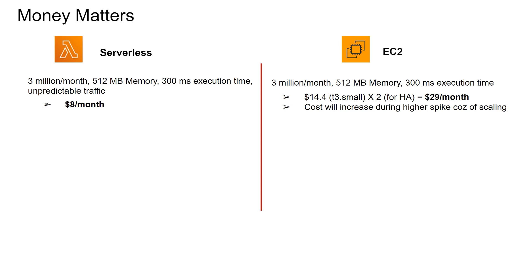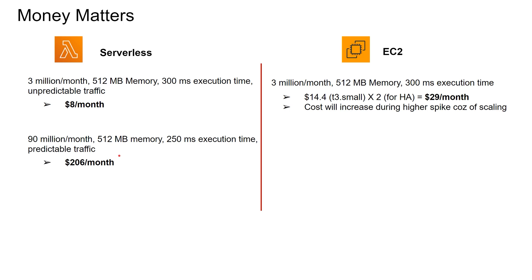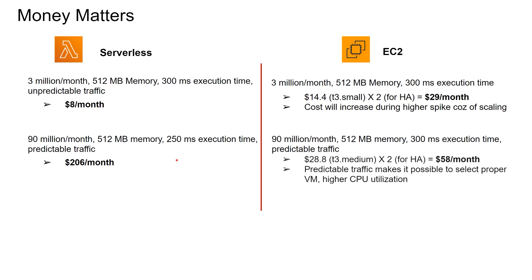Now let's look at another scenario where traffic is 90 million executions per month, 512MB of memory, each execution 250 milliseconds, and traffic is predictable. Lambda would cost $206 a month. For EC2, this traffic can be accommodated using two T3 medium instances for high availability at only $58 per month. The key difference is that predictable traffic makes it possible to select a proper VM with higher CPU utilization. If traffic is steady, the EC2s don't need to scale, the CPU stays high — which is good — and you don't pay for idle resources, hence the lower cost.